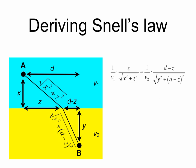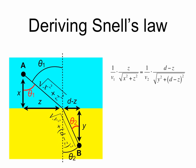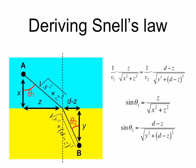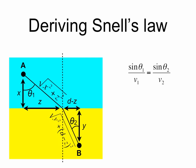Now we simplify by drawing in the normal. Notice we don't yet have theta1 and theta2, which appear in Snell's Law, so we introduce those now. The normal line is drawn as a dashed line. Theta1, the angle between the light ray and the normal, is labeled in the blue region, and theta2 in the yellow region. Using alternate interior angles, sine theta1 equals z over the square root of x squared plus z squared, and sine theta2 equals (d minus z) over the square root of y squared plus (d minus z) squared. Substituting these gives sine theta1 over v1 equals sine theta2 over v2.